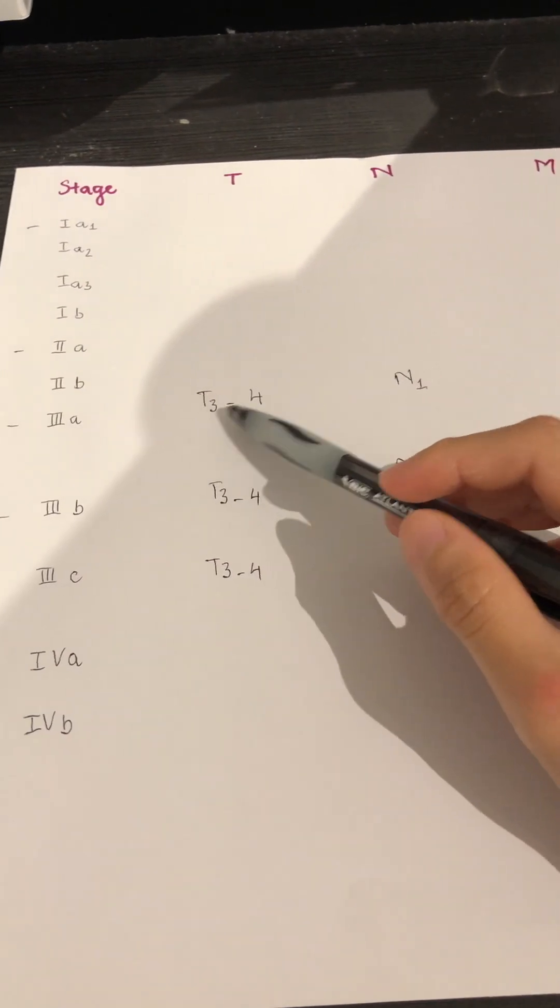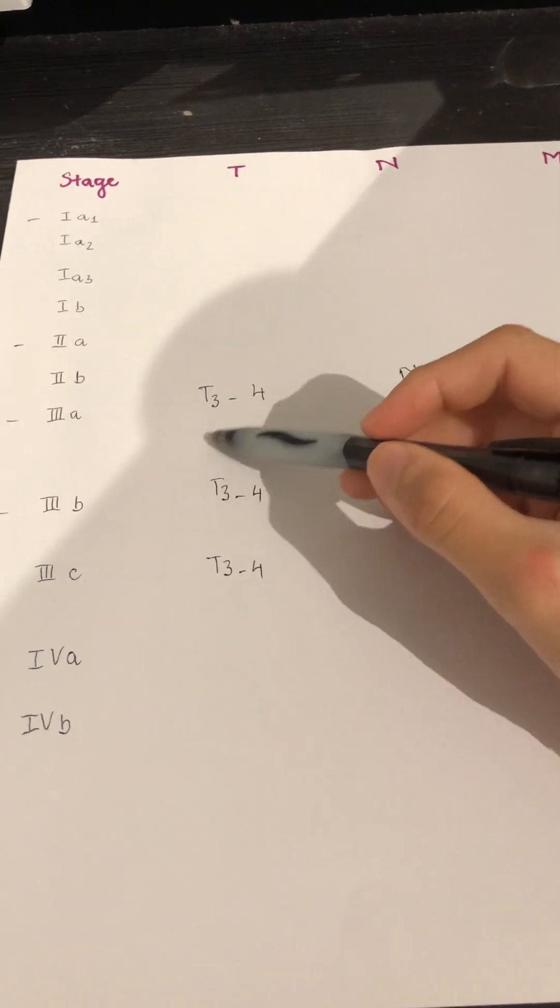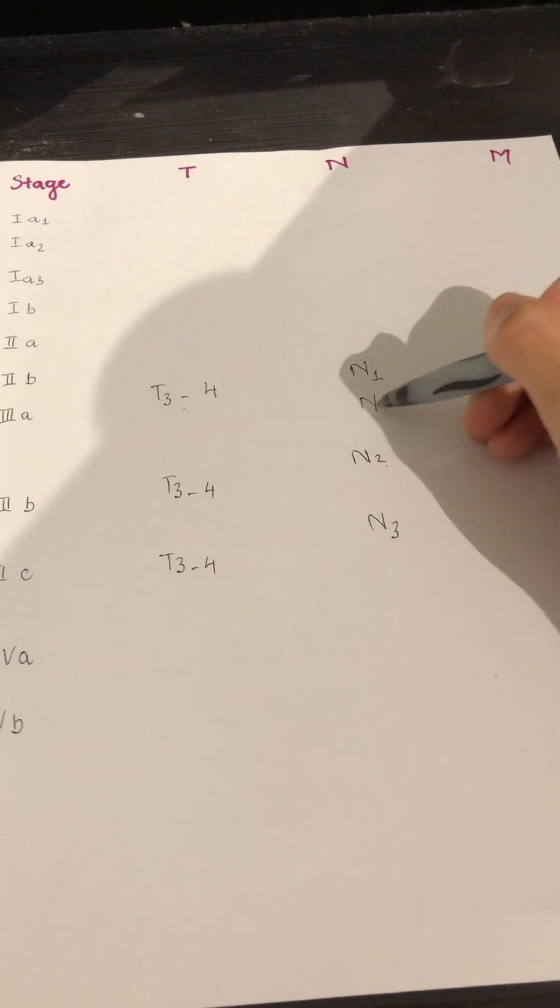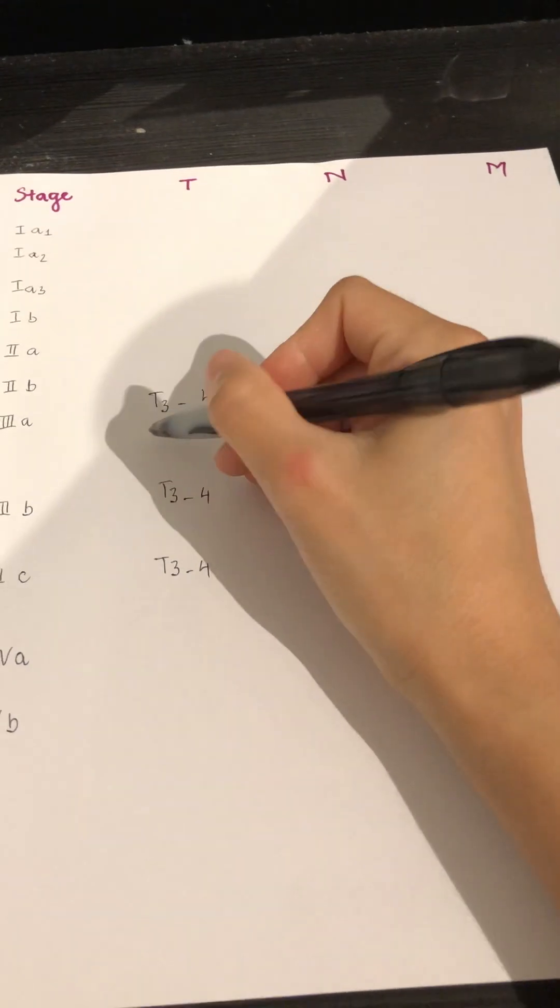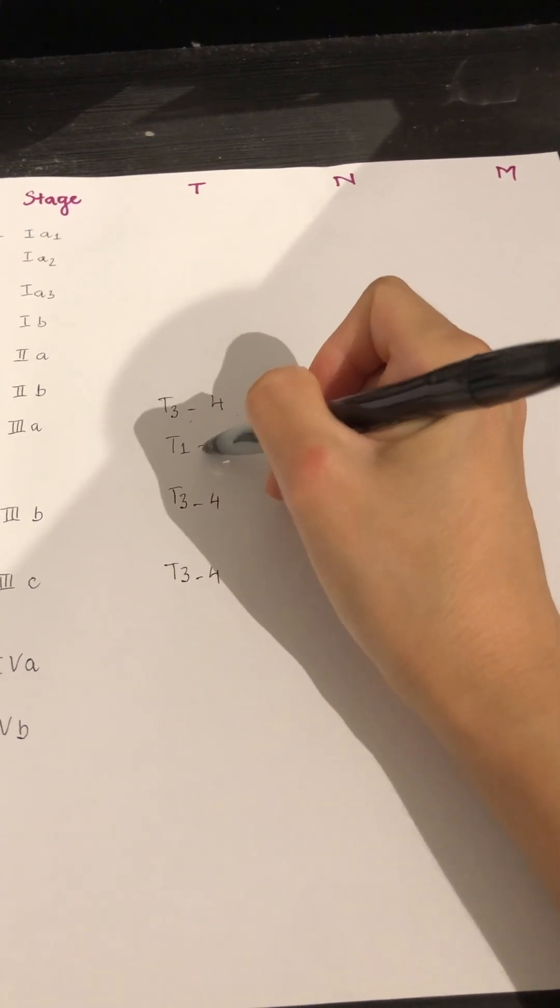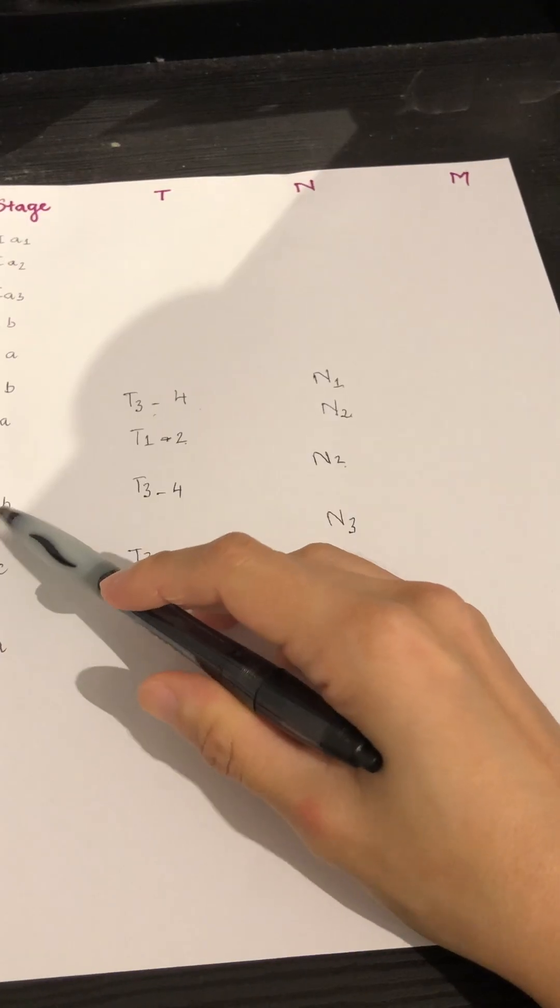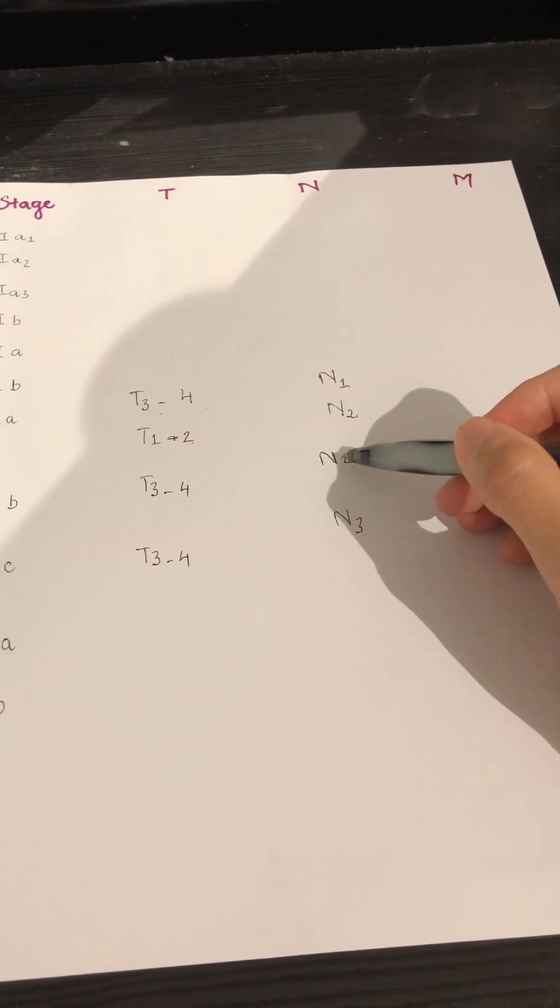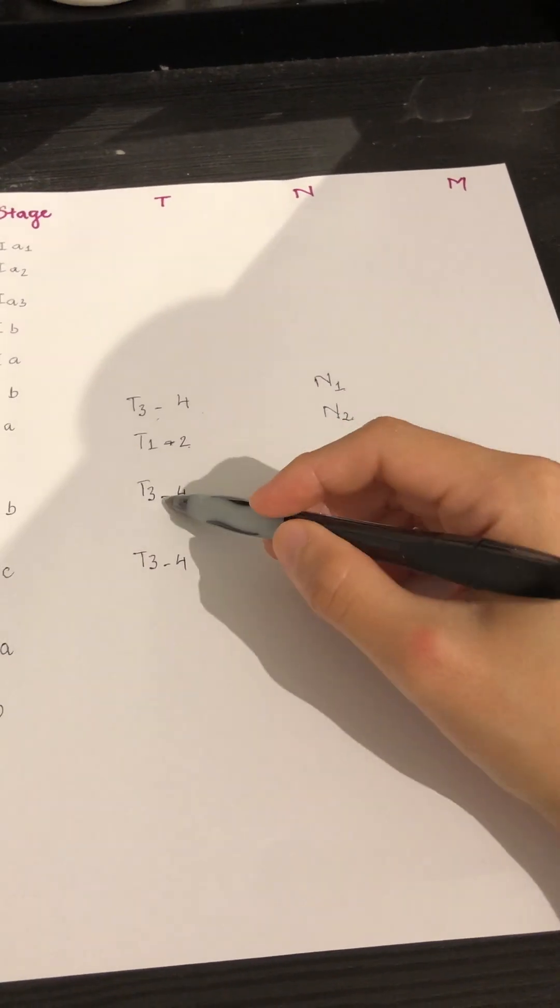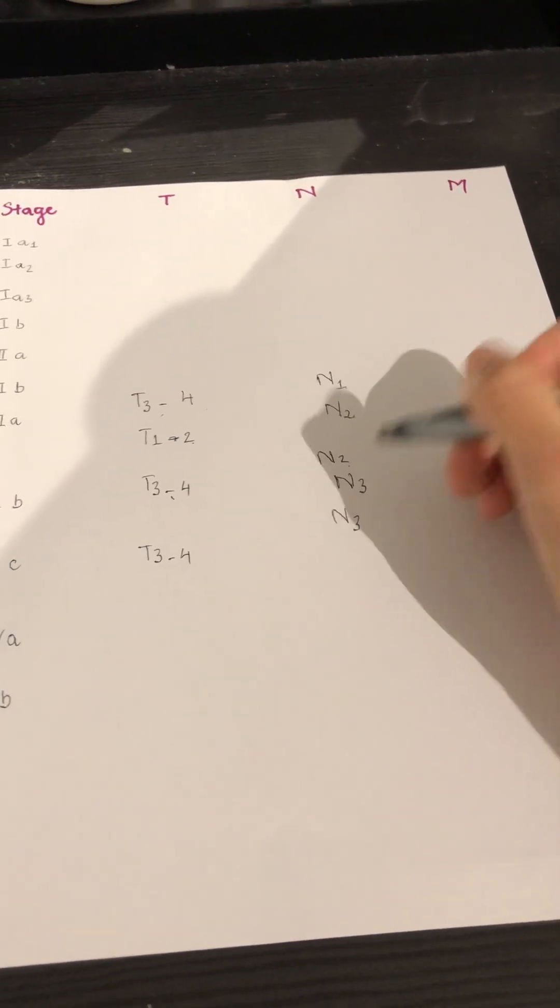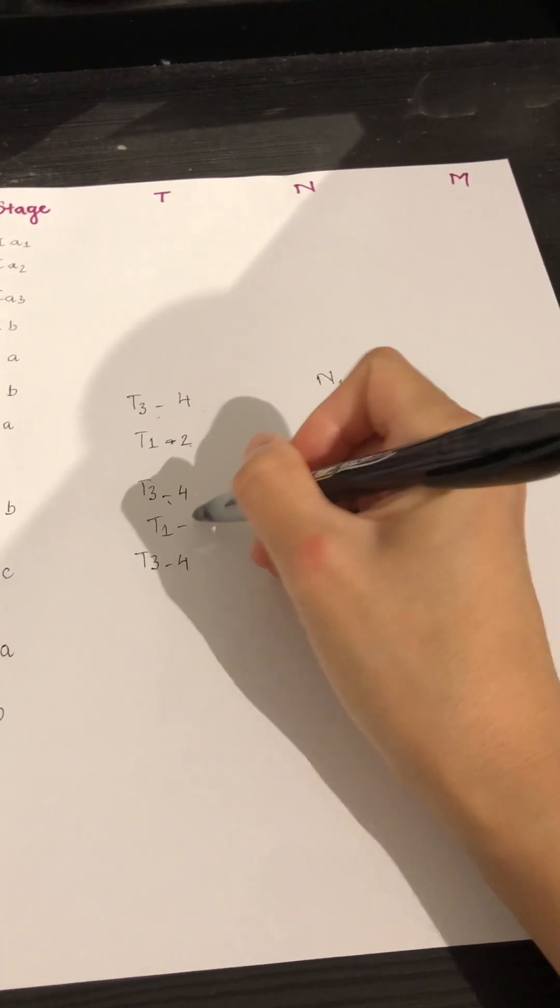So starting with 3A, 3 and 4. You cannot go up higher on T, so you go up higher on N. So N1, you go up to N2 and this would be T1 and T2. Here, similar to 3B, because you cannot go up higher on T3 and T4, so you have to go up on N. So N3 here and T1 and T2.